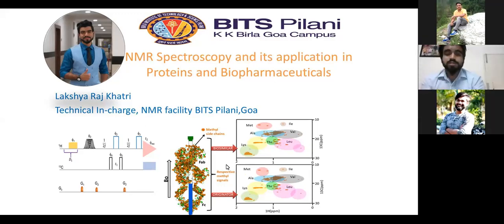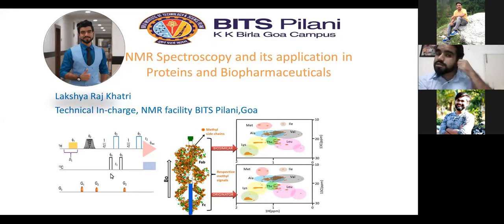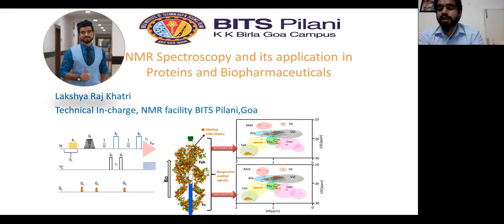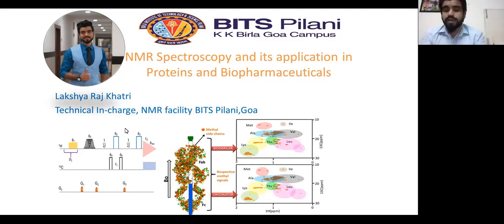Starting from the first page, on the left side you can see a typical pulse program or pulse block of an NMR experiment. In the middle is a schematic design — this is an NMR tube where we put our sample. B0 denotes the magnetic field. This is a protein sample; for an antibody we have two parts, FAB and FC region. We have generated spectra for two different molecules — originator and biosimilar, two bio-pharma products.